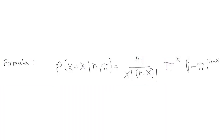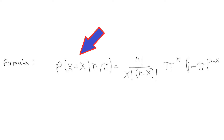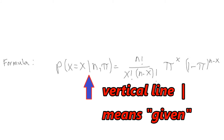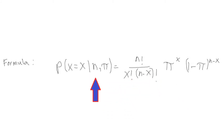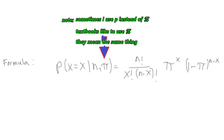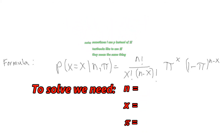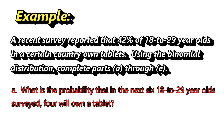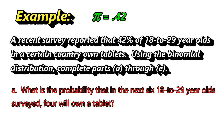Here's the formula. We have P, the probability of X equal to some number, given — that vertical line is the symbol that means 'given' — N, the number in the sample, and then pi, the probability of a success. You might use P instead of pi; it's the same thing. We need N the sample size, X the number of successes, and P or pi the probability of a success. For this problem, pi is 42%, and we always use the decimal representation, so 42% is 0.42.